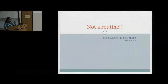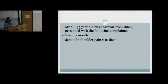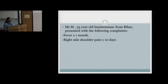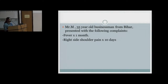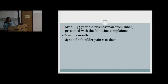Good evening. I am presenting from Medicine 2. This is about Mr. M, who is a 35-year-old businessman from Bihar, who has presented with fever for the past one month, which is low grade and intermittent, and right-side shoulder pain with restriction of joint mobility.